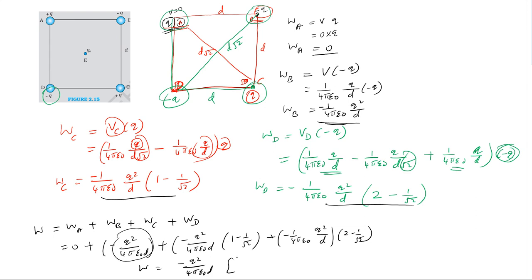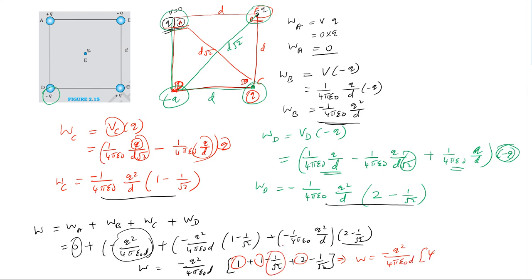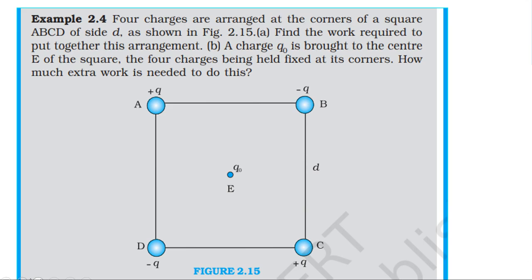Inside the bracket: first case gives 1, second case gives 1, minus 1/√2 terms, and the diagonal terms give minus 1/√2 each. Adding: we get four terms minus root-two terms. Total work done equals minus Q²/4πε₀d × (4 - √2). That is the answer for part one.